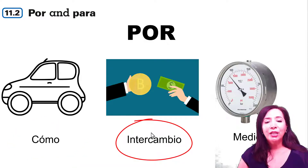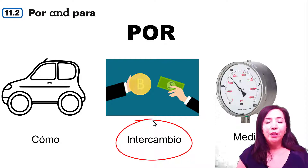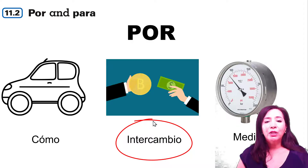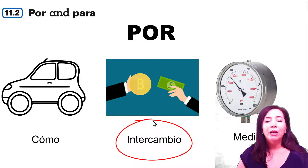Intercambio — when there's an exchange, you need to use por. For example, mi hija limpió la cocina por veinte dólares. That means there was an exchange: she provided a service and I paid her. Or if a coworker can't work on a certain day and I substitute her, there's an exchange there — yo trabajo por ella, o voy a trabajar por ella el lunes.